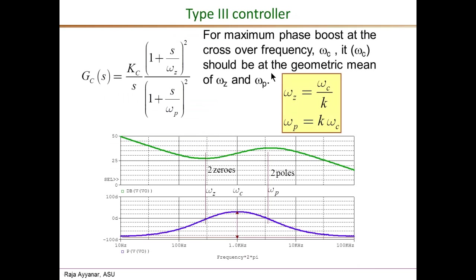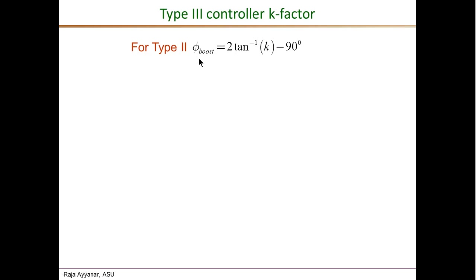Since Type 3 uses two pole-zero pairs at the same location, it produces twice the phase boost of Type 2. The maximum phase boost occurs at the geometric mean, exactly as before. The design procedure is almost identical: omega_z equals omega_c over K and omega_p equals K times omega_c. The phase boost equation for Type 2 was 2 arc tan(K) minus 90 degrees, so for Type 3 with two pairs the expected phase boost is exactly twice that.